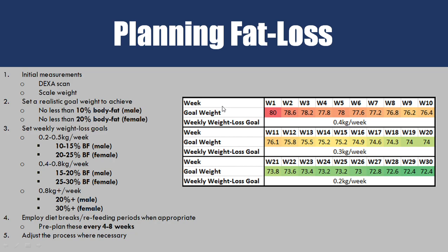Here's an example of a 30-week weight loss plan. We start at 80 kilos — say a male at 15 to 20% body fat — so we start losing at 0.4 kilos per week. We have breaks at week five and week ten; at week five we put on about 0.2 kilos, then continue losing at 0.4 kilograms per week. After another break at week ten, having lost nearly four kilos and dropped to around 15% body fat, we find it harder to lose 0.4 per week, so we drop down to 0.3 kilos per week.